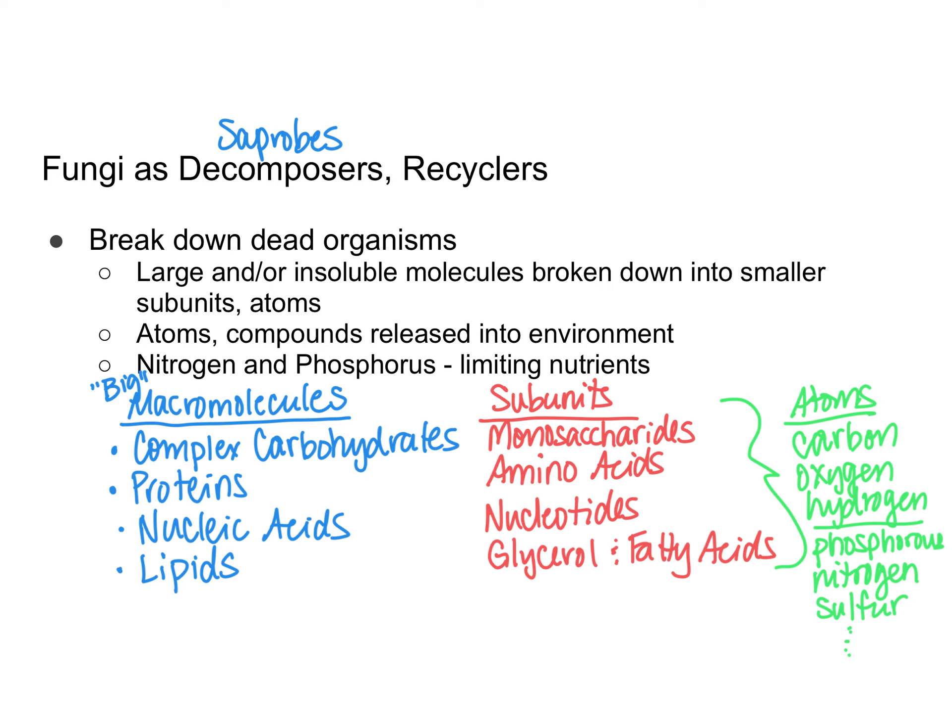When an organism dies, decomposers come in — fungi are one example, but bacteria can also be decomposers. They break down the bigger macromolecules into their subunits and then further break them down into their atoms. These atoms get released into the environment so that other living organisms can use them to make new molecules. There is a set amount of matter on the planet, and decomposers help recycle it — the carbon atoms in a dead tree get released so another plant can pick them up and use them to make organic compounds.